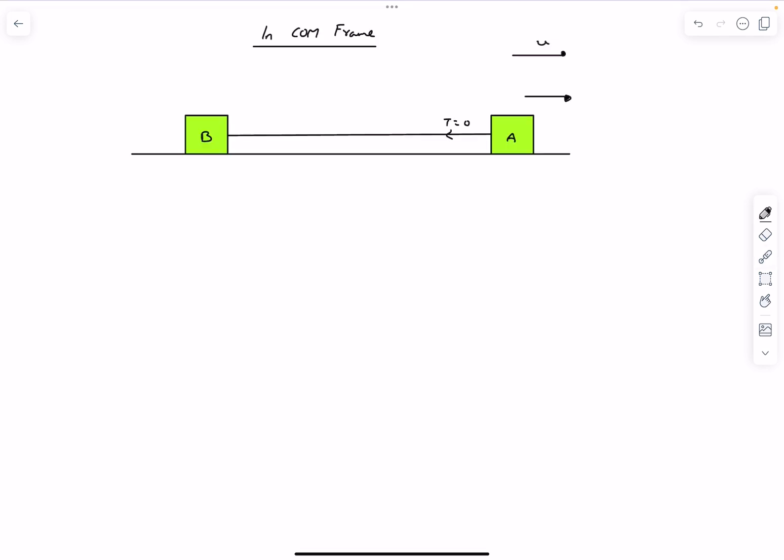In the center of mass frame, the momentum of block a before the string tension starts acting is going to be the reduced mass multiplied by the relative velocity between the blocks, which is u. Similarly, in the center of mass frame, even block b is moving. As we know, the net momentum in the center of mass frame should be zero. Momentum of block b should be mu times u towards the left.